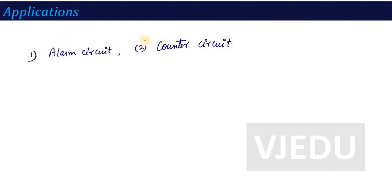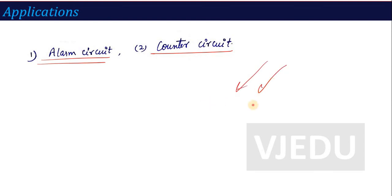Regarding applications: photodiodes can be used in alarm circuits, where light is incident and the output is used to trigger a further action. They can also be used in counter circuits — when light is incident and the current crosses a particular value, it starts counting, showing how much time the light intensity remains above a particular value. These are some of the applications of the photodiode.